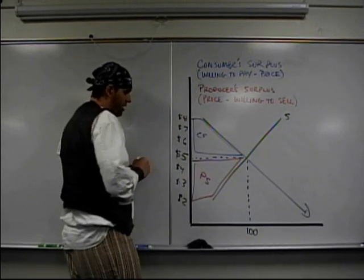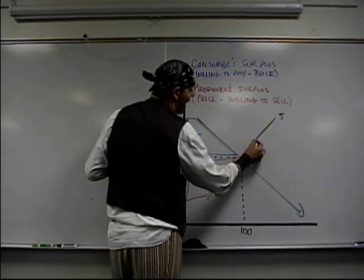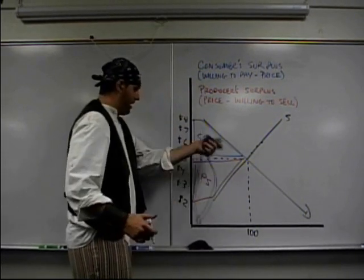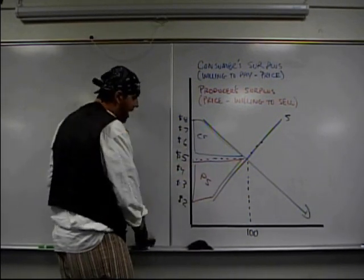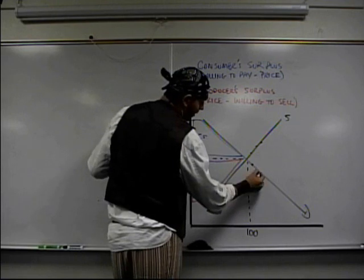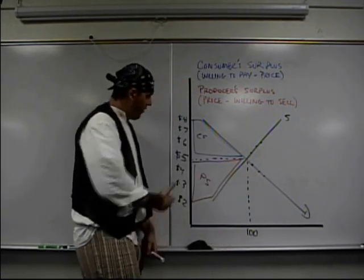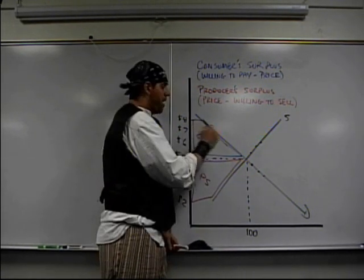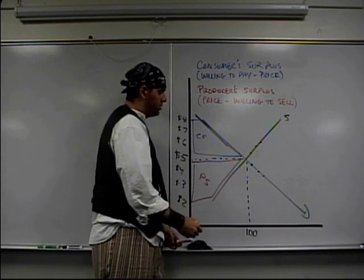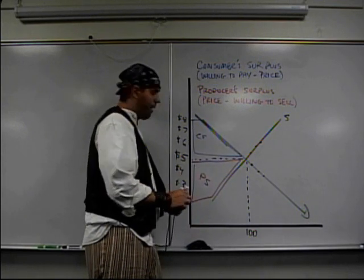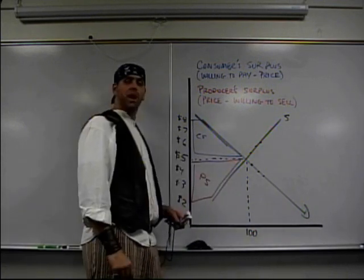Now here's what's cool about this. All these producers that have the highest cost can't sell it because they can't lower the price less than $5. And all these consumers who don't really value it, who only value it for $4, well they can't get it. The products naturally go to the consumers who want them the most and they naturally are sold by the producers who can produce from the lowest possible cost.